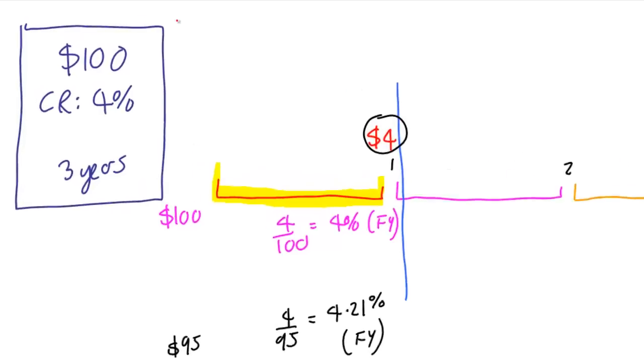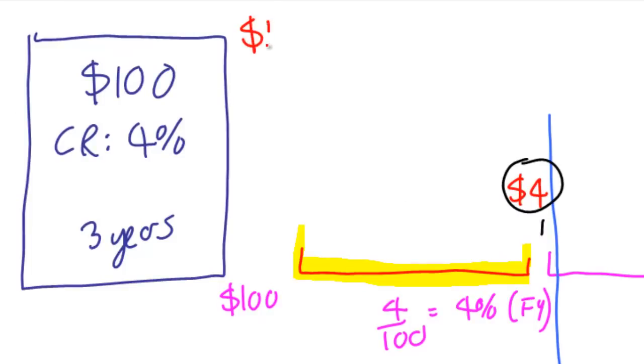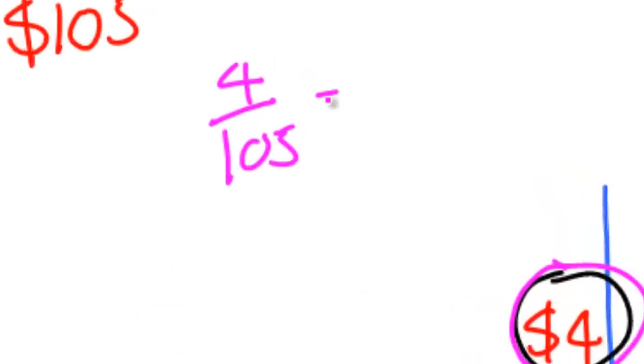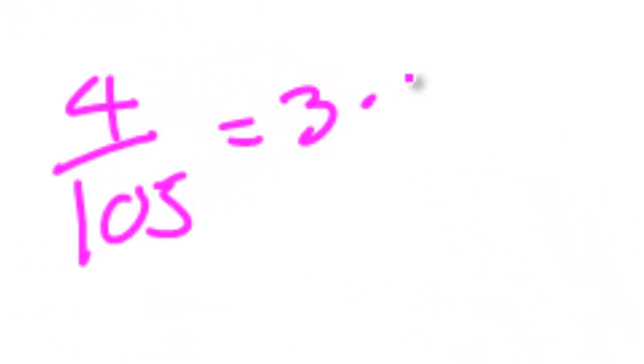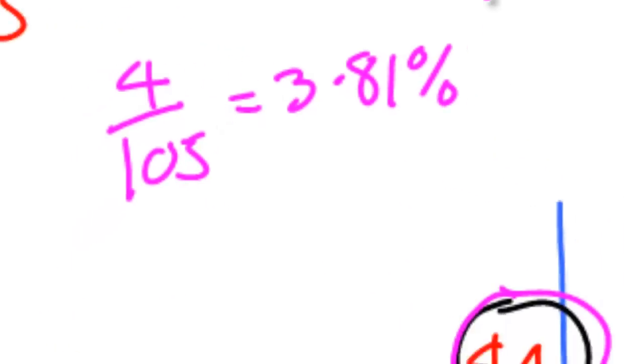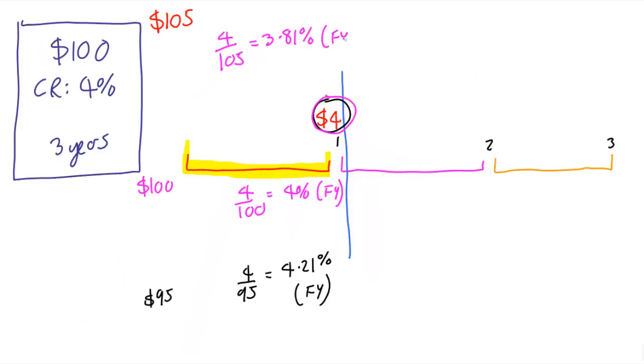The other important case comes when we pay over the odds and we go for a premium bond, let's say at $105. And this time the flat yield is going to be 4, because we get the same coupon, divided by 105. And if you remember from the last video, that came back to be a flat yield rate of 3.81%.